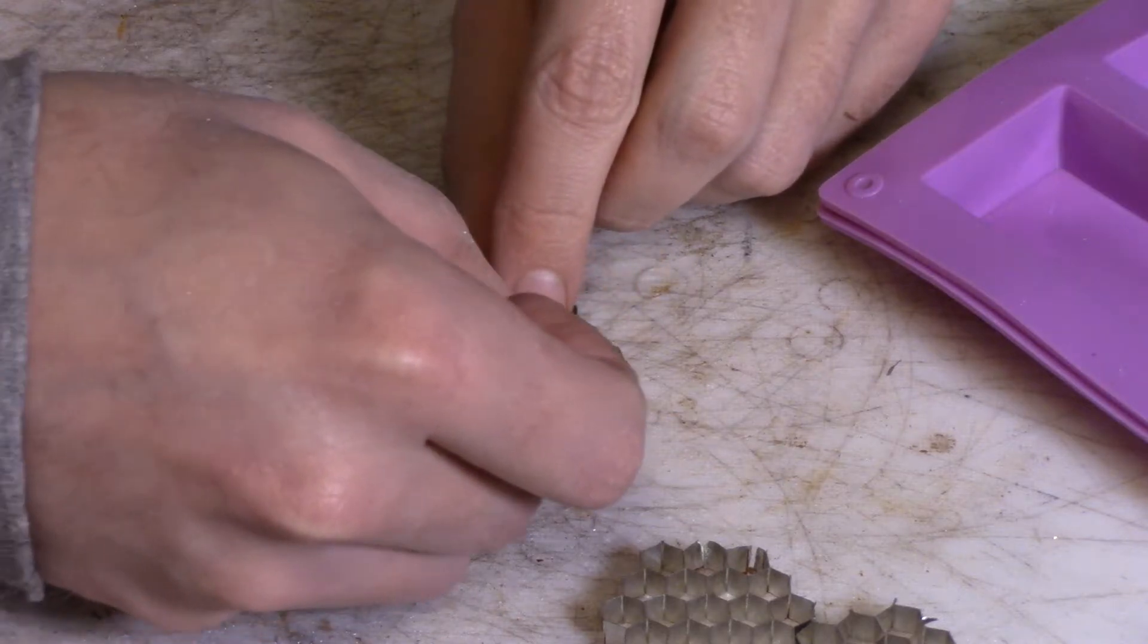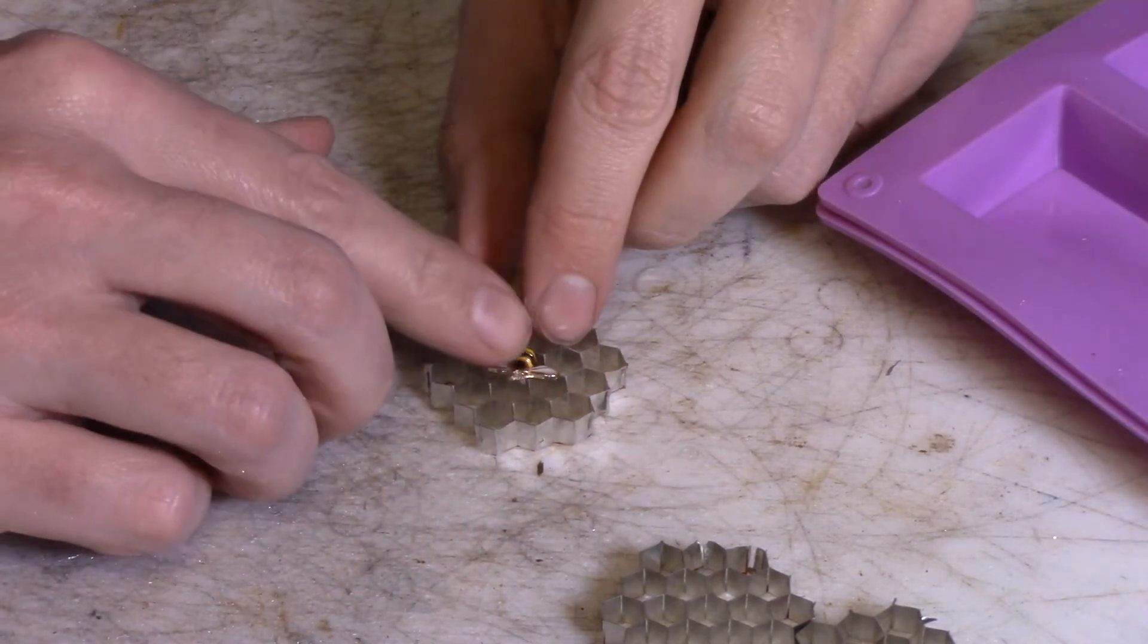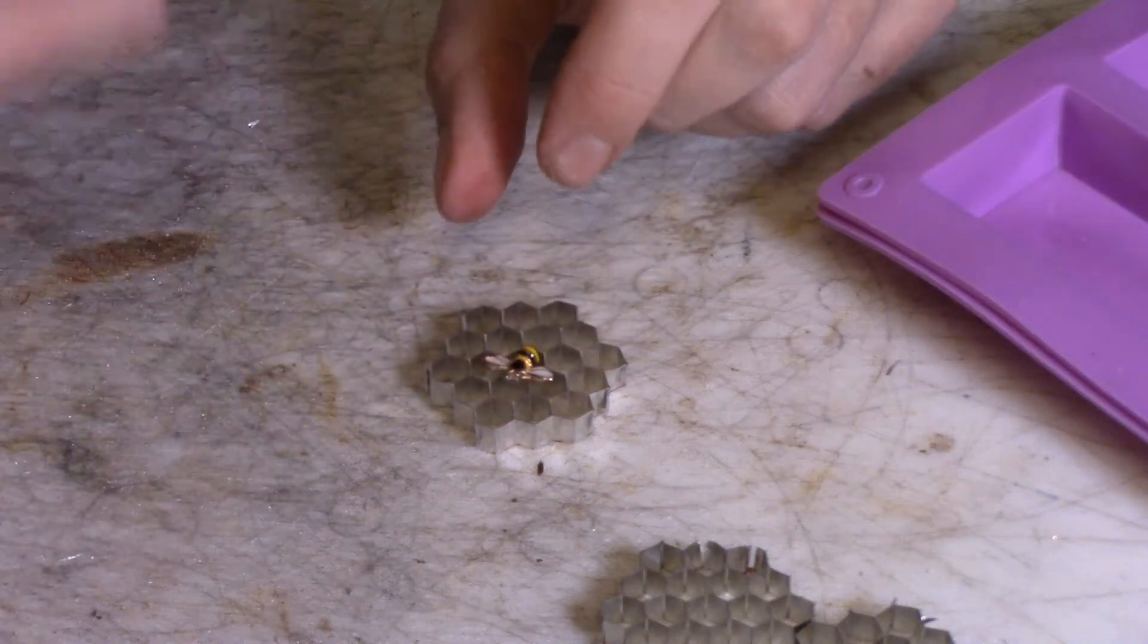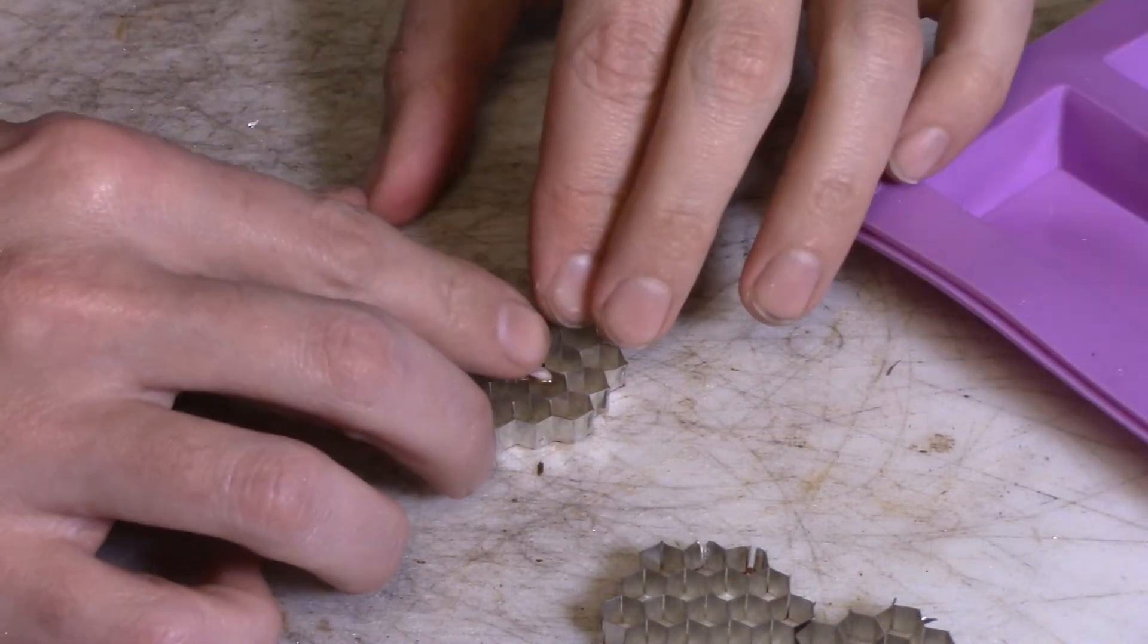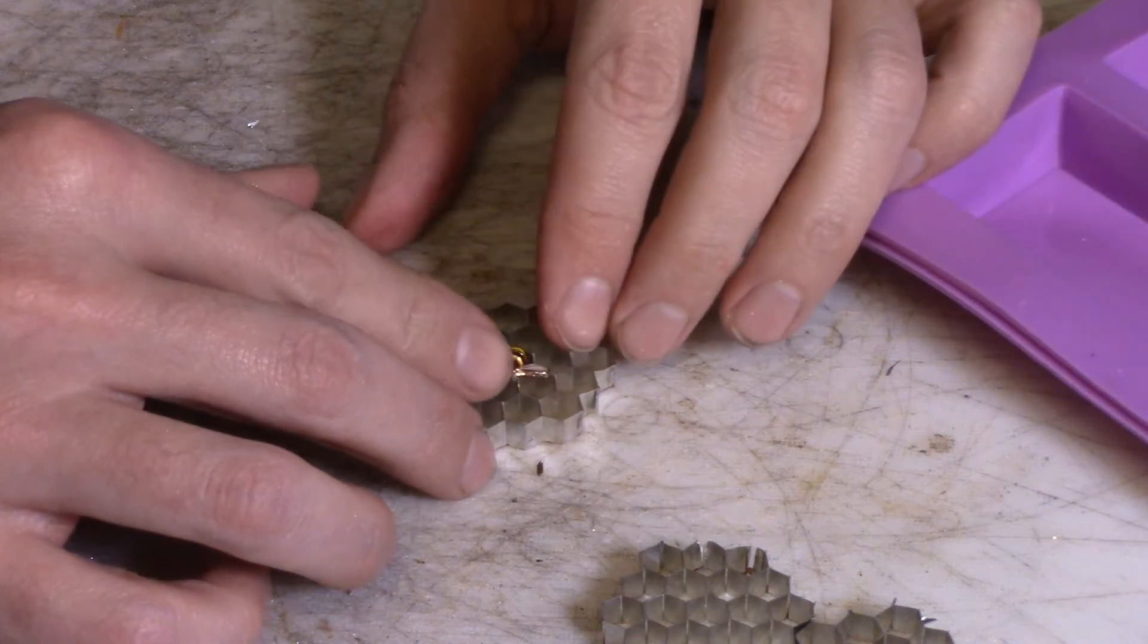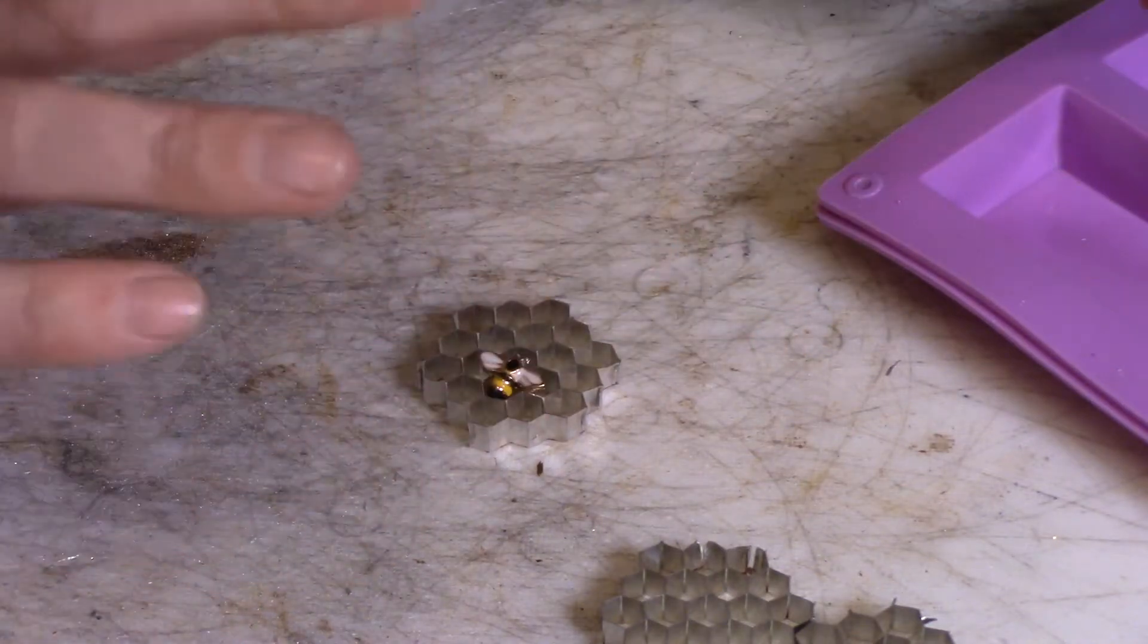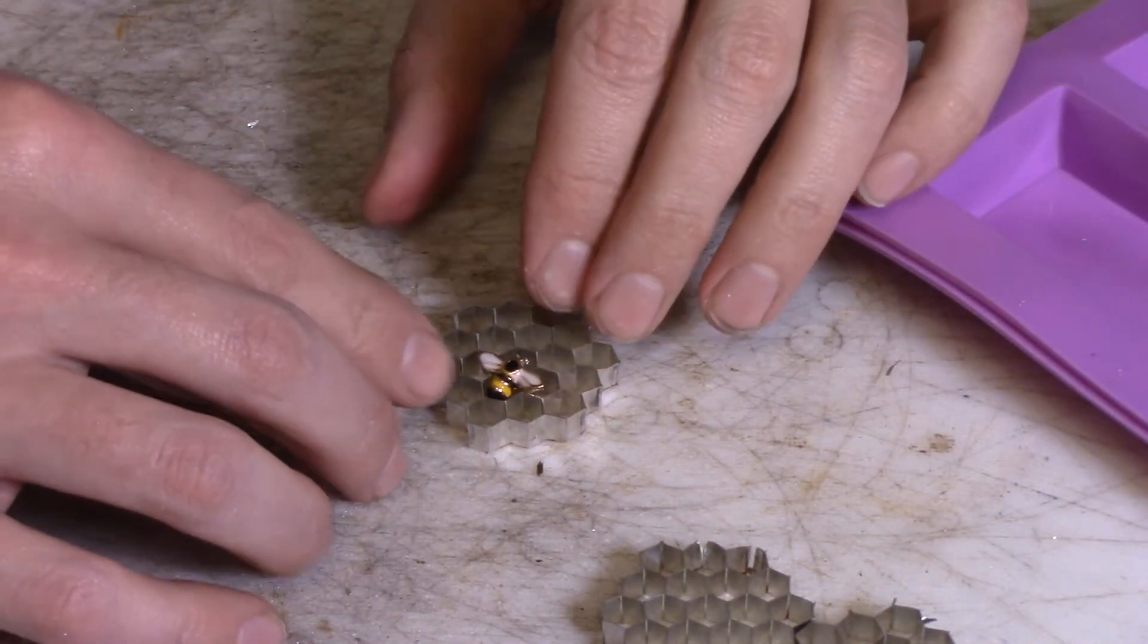Now each of these is going to need a bee set in it. I'm basically going to set them a little off center just because I think it looks better than if I tried to center them up. So they're going to be kind of where their abdomen or their head is going to be in the center depending on which way I want to lay them in there.